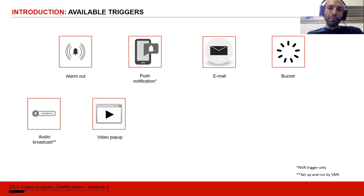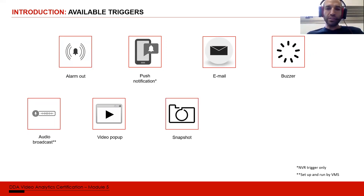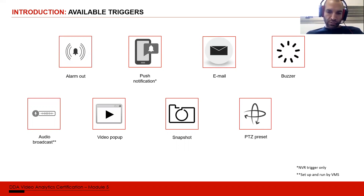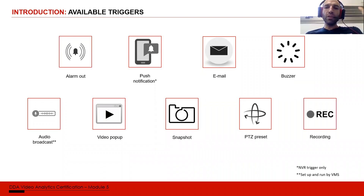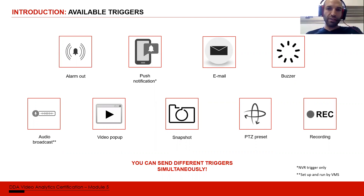Video popup pops up the video to the main or secondary screen on the VMS — I will show that as well. Snapshot takes a snapshot of the event and saves it on the SD card or local hard drive. PTZ preset: if we have a PTZ installed on the same site, we can set different presets looking in the same direction as the DDA camera, and when the DDA camera detects a person, it calls the PTZ preset. And of course, the most obvious one is recording — on SD card, hard drive, NVR, DVR, or VMS. We can activate some or all of these simultaneously.